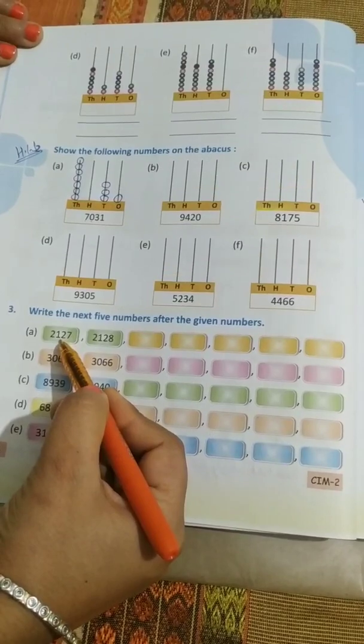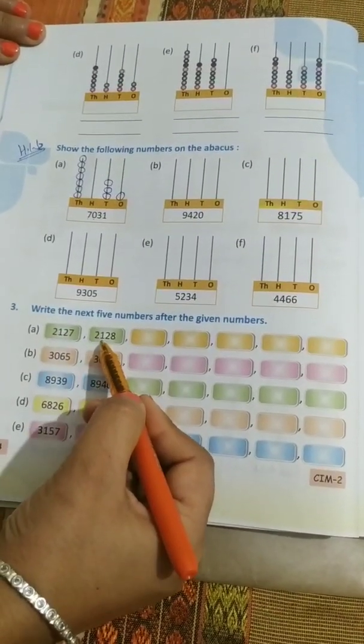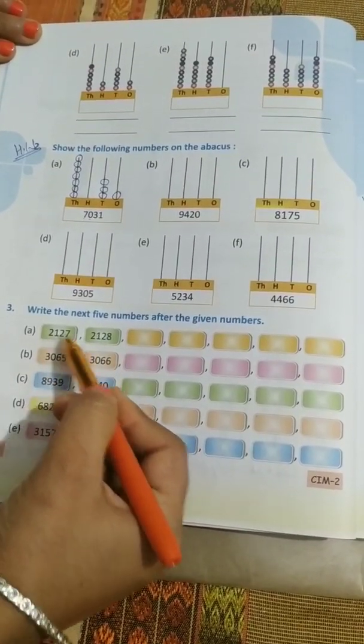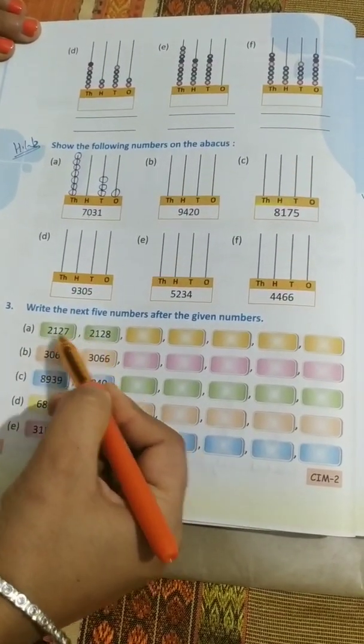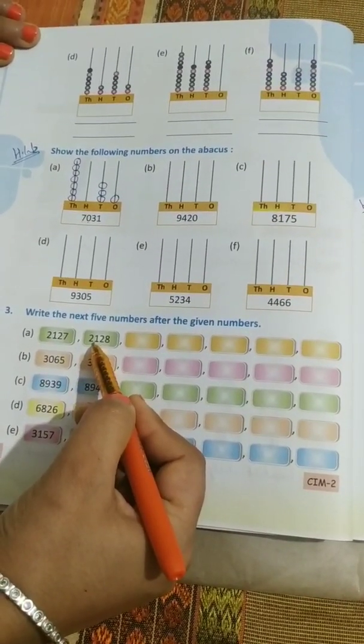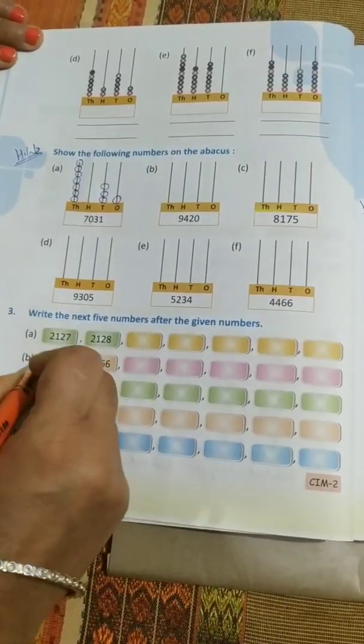observe the given numbers here: 2,127, 2,128. Now just see, 21, 21 is same in both the numbers. What is changing over here? Only the last 2 digits. Underline these 2 digits.